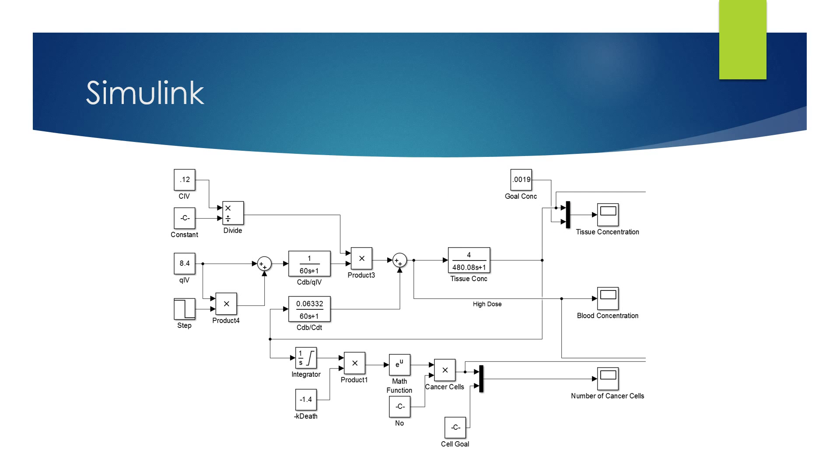Once we had those equations, we were able to create a Simulink model in which we had our input values, being the concentration of doxorubicin in the IV and the flow rate of the IV. Now for our model, both of these were constant. We changed them according to different dosages. So the concentration in the IV is our dosage amount.